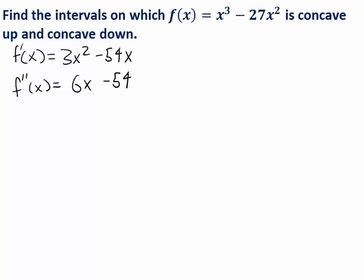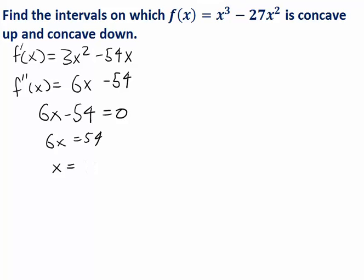What we're going to do next is a lot like what we did to construct a first derivative sign chart, except we're going to be looking at the signs of the second derivative instead of the first derivative. So let's first figure out where the second derivative is zero. It's an easy equation to solve — we get one solution at x equals 9.